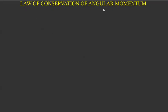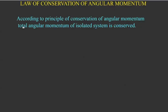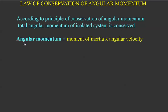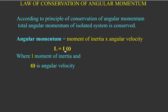Law of conservation of angular momentum. According to the principle of conservation of angular momentum, total angular momentum of an isolated system is conserved. Angular momentum is equal to moment of inertia times angular velocity. That is L equals I omega. Where I is moment of inertia or rotational inertia, and omega is angular velocity.